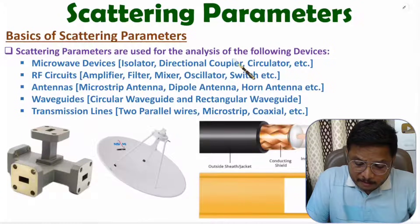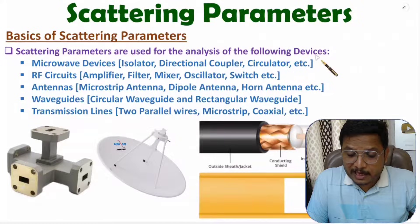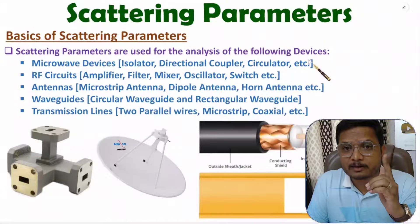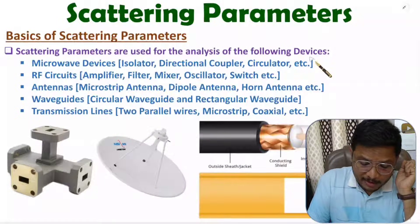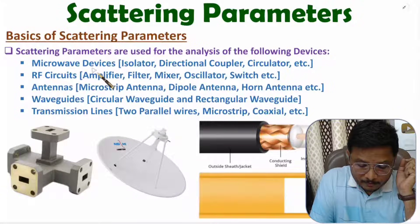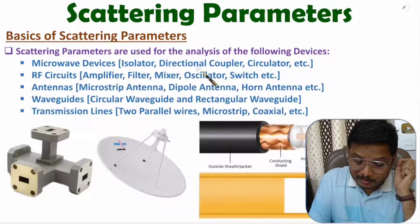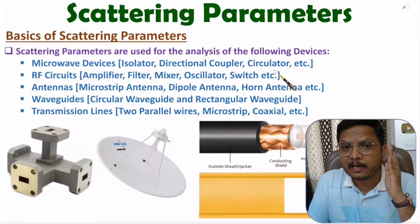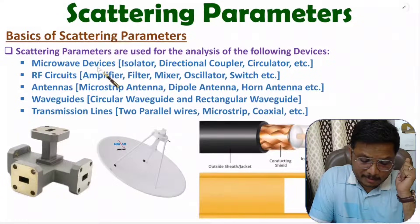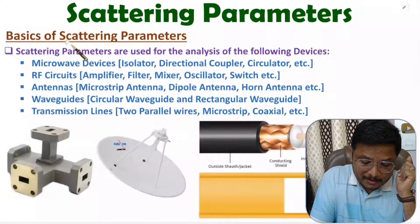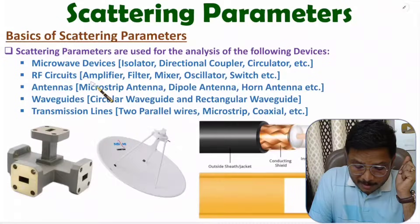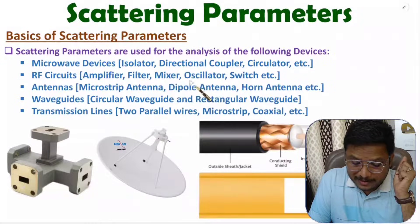Scattering parameters are used to identify reflection coefficient and transmission coefficient — how much portion of waves are getting scattered in different ports. Scattering parameters are used to analyze devices operated at microwave frequencies, meaning frequencies in the range of 1 GHz to 300 GHz. Microwave devices include isolator, directional coupler, circulator, Magic T, E-plane T, and H-plane T. At microwave frequencies, RF circuits can also be analyzed using scattering parameters — including amplifier, filter, mixer, oscillator, and switches.